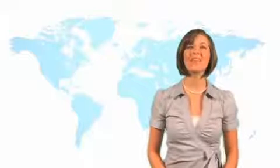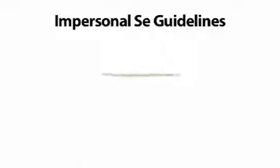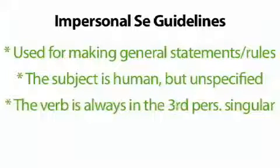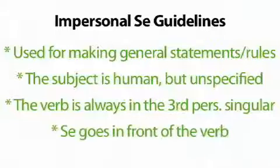So, in review of the impersonal se construction: it is used to make general statements or rules. The subject is human, but is not specified. The verb is always in the third person singular. Se always falls right in front of the verb. Perfecto.